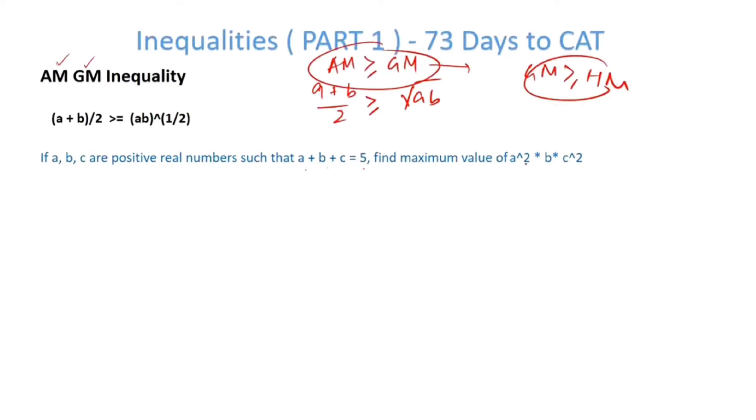So a plus b plus c is equal to 5. Find maximum value of a²bc². To do this we will have to split the numbers accordingly. I have to get a squared, so I can split it as a by 2 plus a by 2. I have to get b so I will let it be. I have to get c squared so I will split it into c by 2 and c by 2. You will realize why I'm doing this.